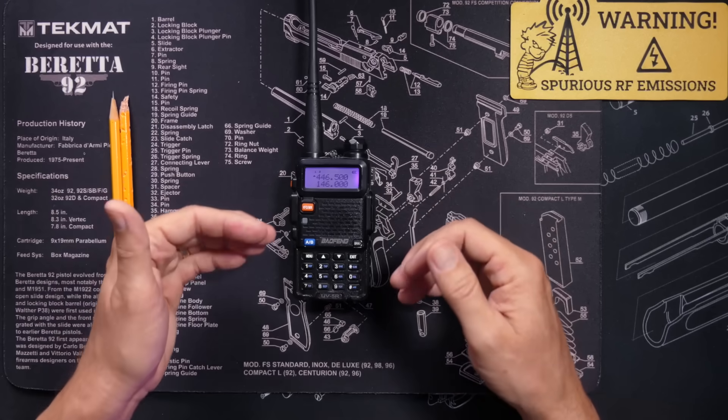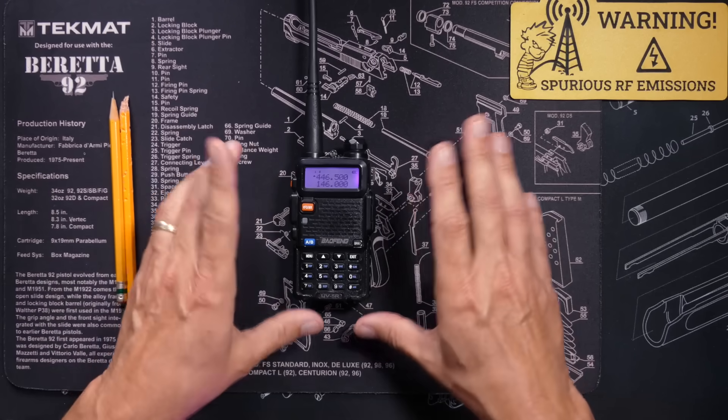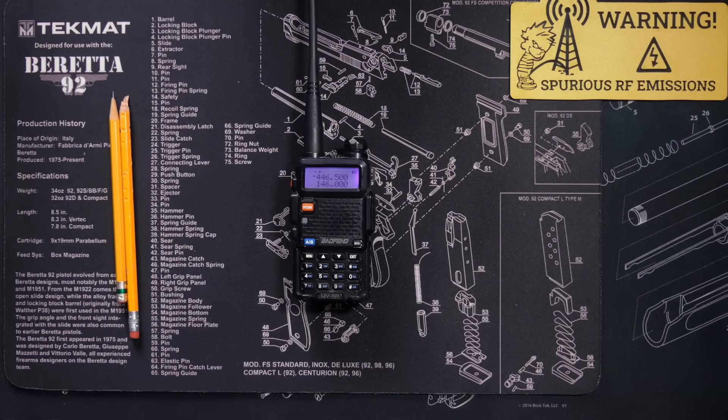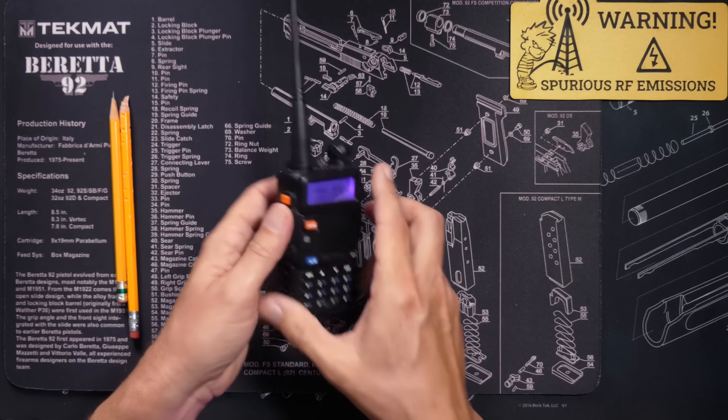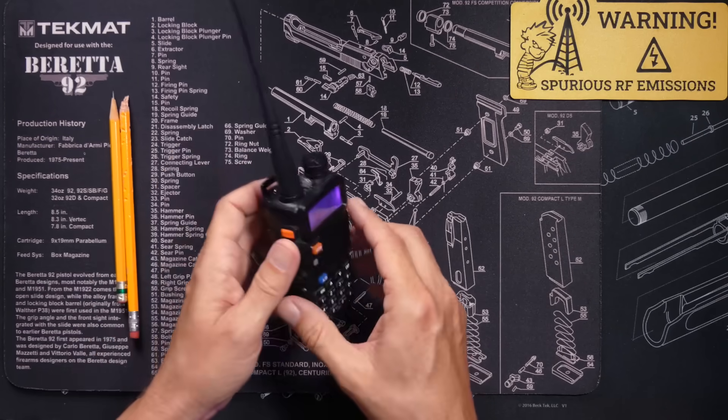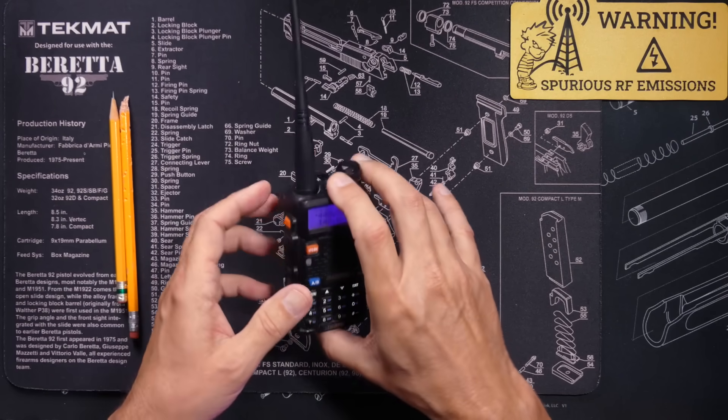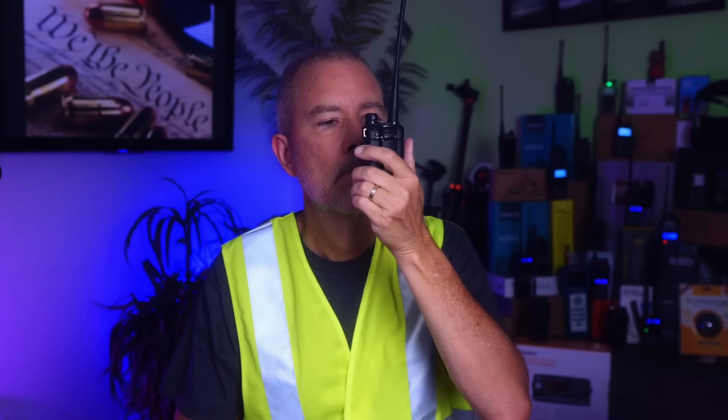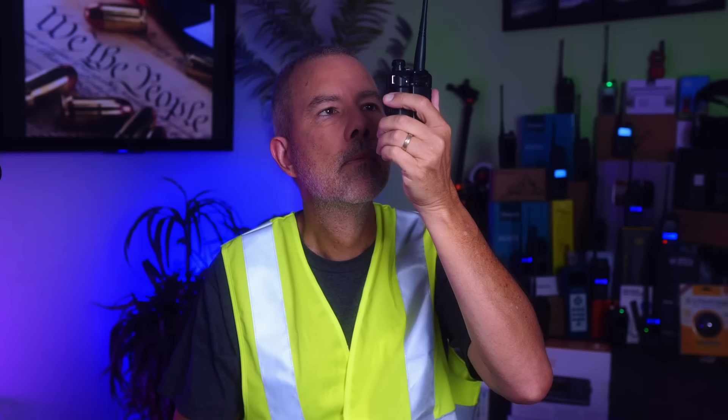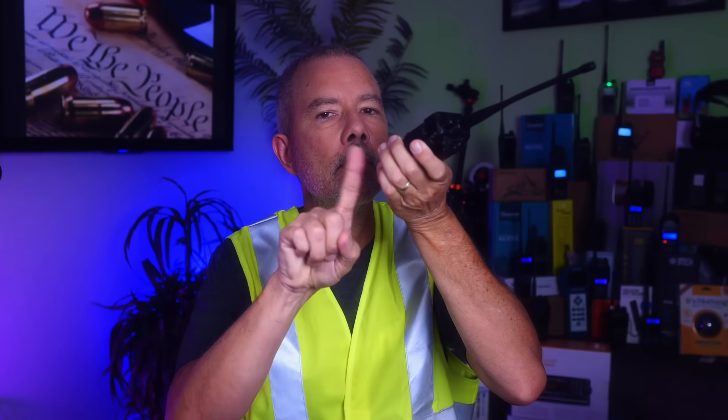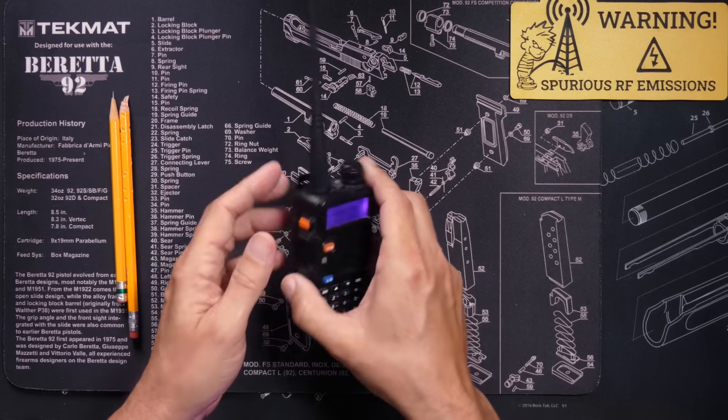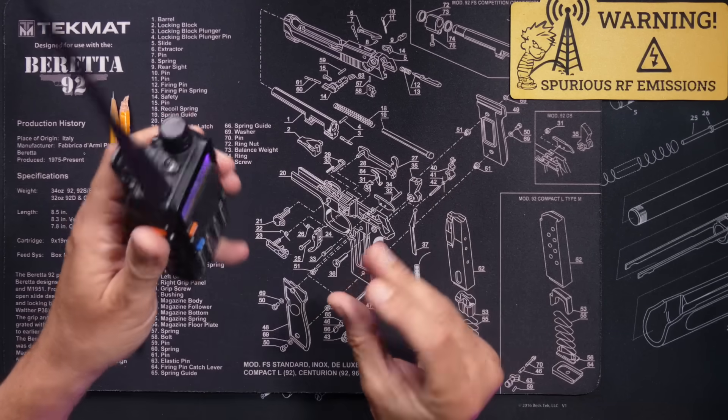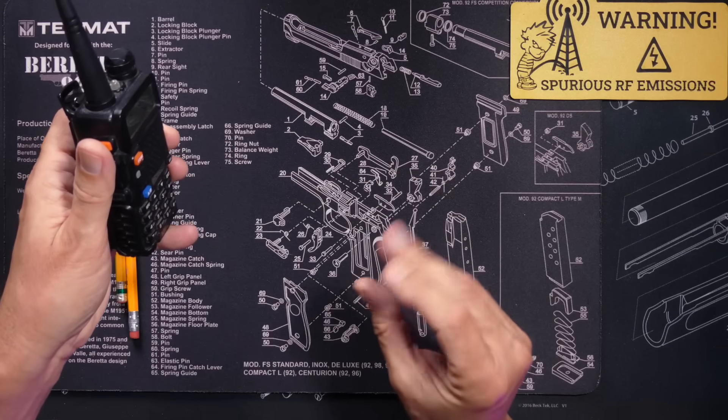If the person you are transmitting to complains that you are coming in weak or staticky, or if they cannot hear you at all, an advanced method you can try is to hold the radio up higher as you press the transmit trigger. As you do this, look upward and move the radio higher up in relation to the ground, whilst ensuring that the antenna remains pointing upward. Be sure to speak loudly and clearly because the radio will now be further from your noise hole.